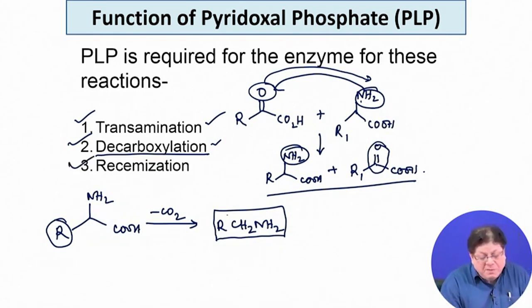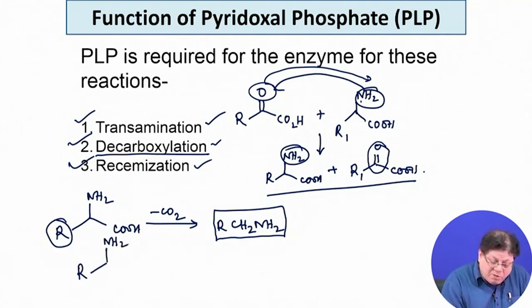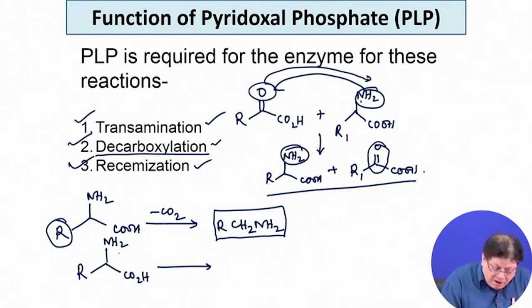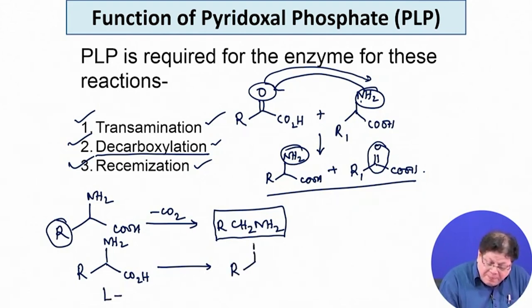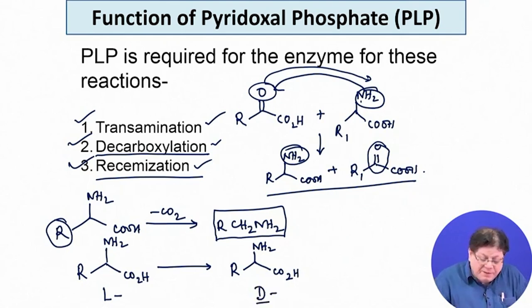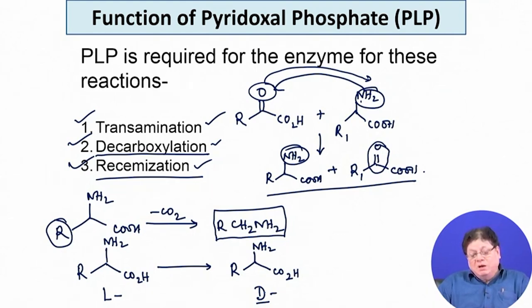The third reaction is called racemization, and the enzyme is called a racemase. All the protein amino acids belong to the L configuration — or in RS notation they are S-configured, except for cysteine where L-cysteine corresponds to the R configuration. Racemization means you take an L amino acid and convert it into the D amino acid using this PLP-dependent enzyme called a racemase.